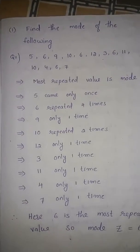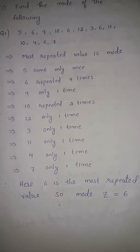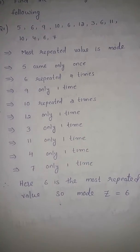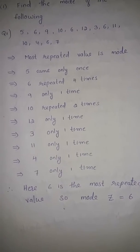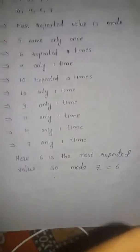7 came only one time. So here 6 is the most repeated value. Therefore, the mode z is equal to 6 in the given data.